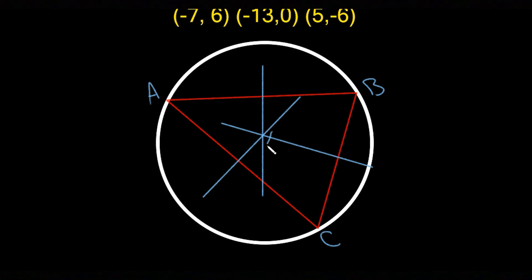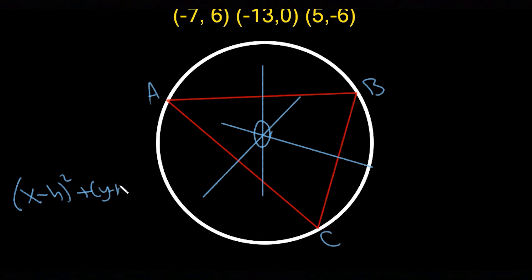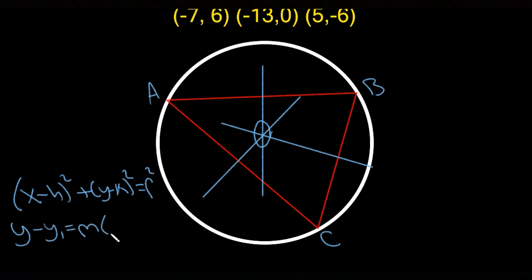This point right here will end up being the center of the circle, and I can use that to my advantage. Now you have to know the equation of a circle: (x - h)² + (y - k)² = r². You're also going to need point-slope form: y - y₁ = m(x - x₁). You'll need that to get the equation of these perpendicular bisectors.